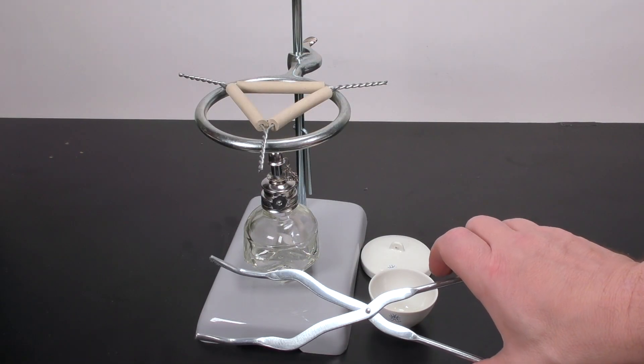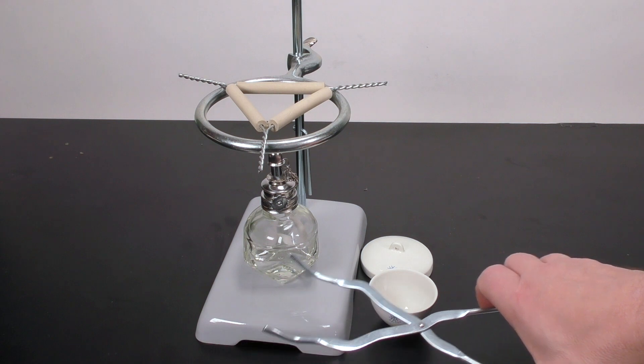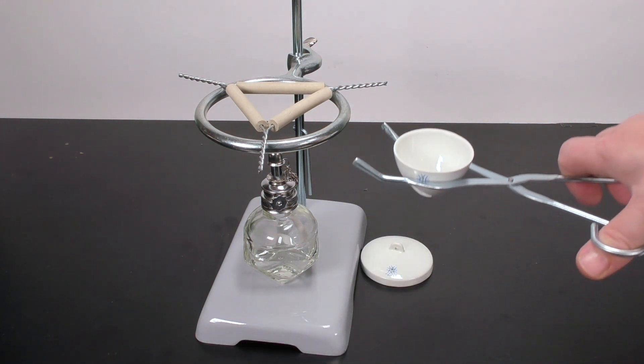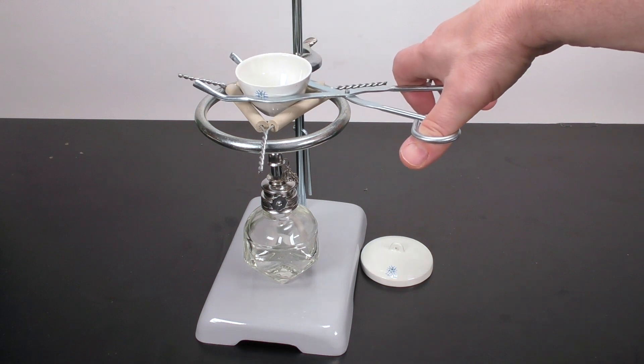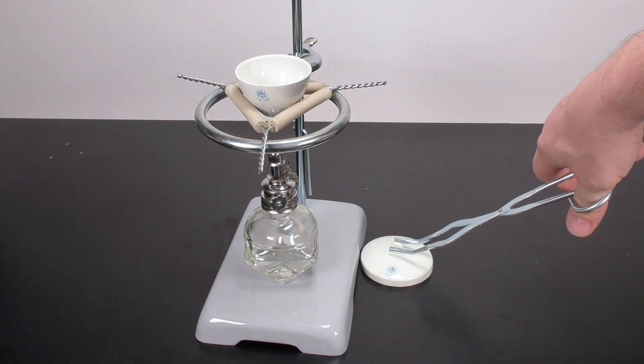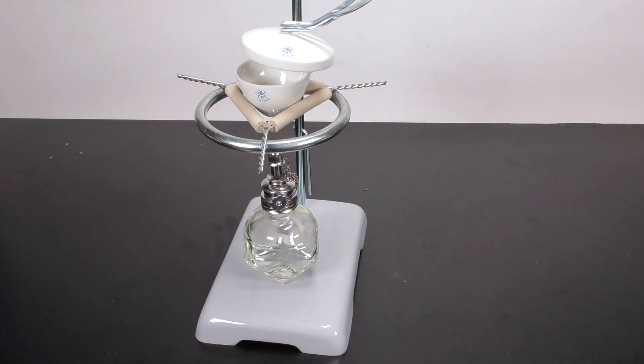You should familiarize yourself with how to use the crucible tongs properly. You want to gently pick up the crucible and place it on the clay triangle and also practice taking the lid and putting it on the crucible.